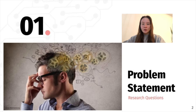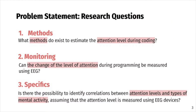In order to contribute to the development of this field, we formulated and answered the following three research questions. First: what methods do exist to estimate the attention level during coding? Second: can the change of the level of attention during programming be measured using EEG? And third: is there the possibility to identify correlations between attention levels and types of mental activity, assuming that the attention level is measured using EEG devices?